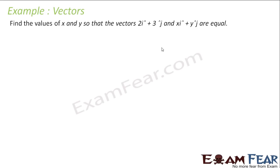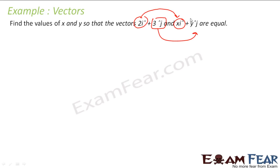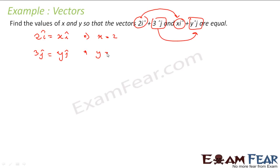Example: find the values of X and Y so that two given vectors are equal. For two vectors to be equal, the î component must be equal and the ĵ component must be equal. So if the î parts give 2Y = X·î, then X = 2. Similarly, from the ĵ parts, 3ĵ = Y·ĵ, so Y = 3. Very simple — equate corresponding components to find the unknowns.